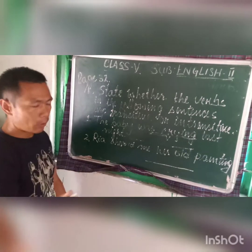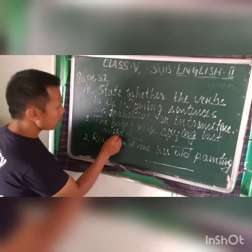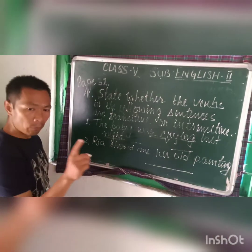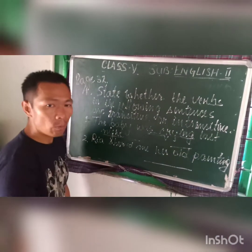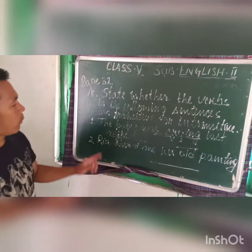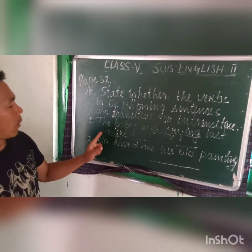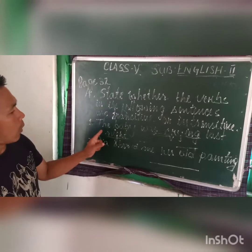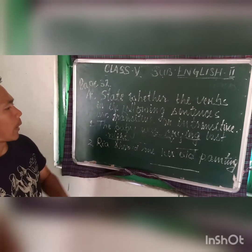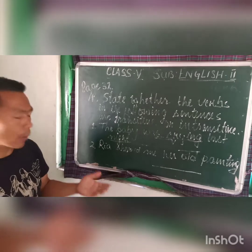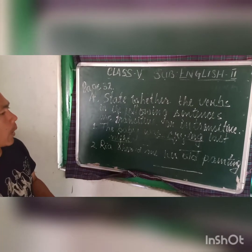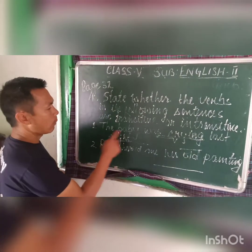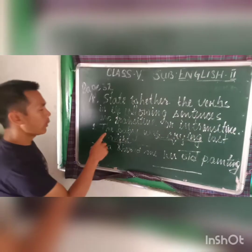In order to find whether 'night' is an object or not, we have to ask the question 'what' or 'whom.' So if we ask the question here: 'What was the baby crying?' — this is not the right question; you cannot ask this question here. But you can ask: 'When was the baby crying?' — and the answer is 'last night.'